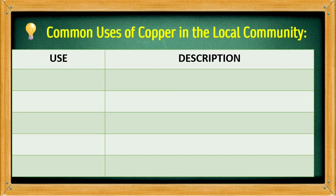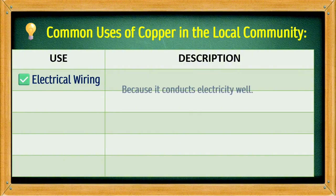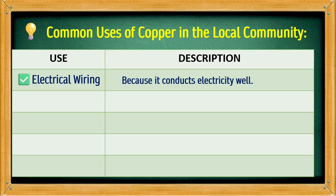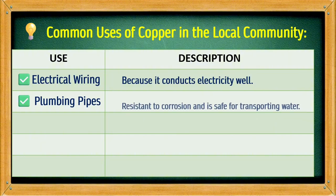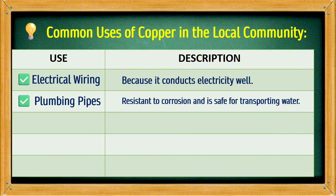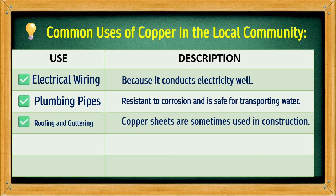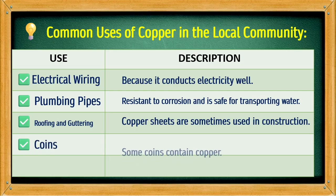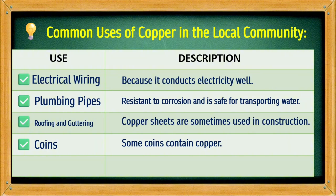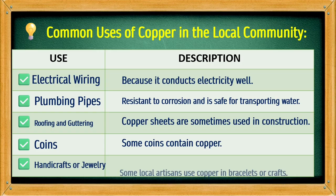Common uses of copper in the local community: Electrical wiring — because it conducts electricity well. Plumbing pipes — resistance to corrosion and is safe for transporting water. Roofing and guttering — copper sheets are sometimes used in construction. Coins — some coins contain copper. Handicrafts or jewelry — some local artisans use copper in bracelets or crafts.